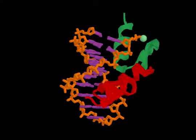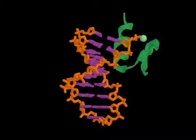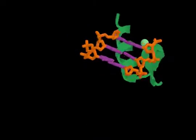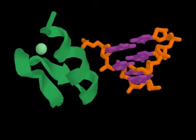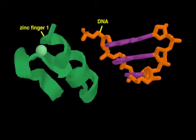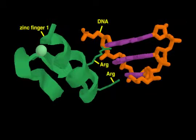The helical region of each zinc finger rests in the major groove of the DNA. Amino acid side chains project out from the helix and contact bases in the DNA.